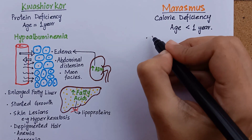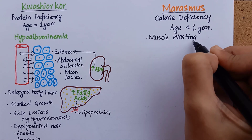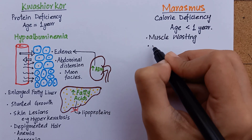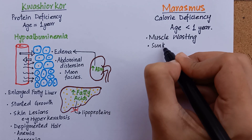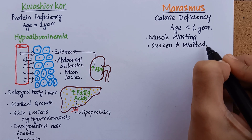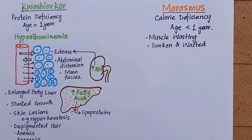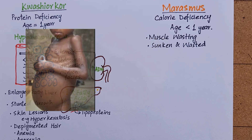In marasmus, there is extreme muscle wasting due to total calorie deficit, and the general appearance is shrunken and wasted due to loss of subcutaneous fat. While in kwashiorkor, the muscle wasting is masked by edema.